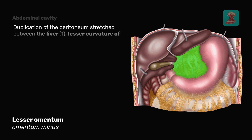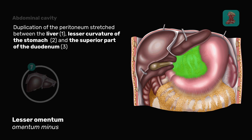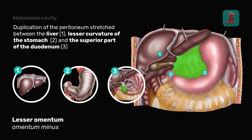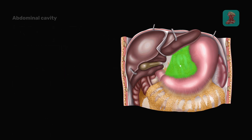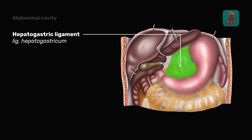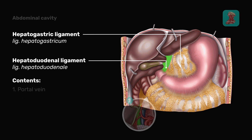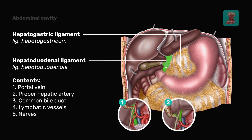The lesser omentum is a duplication of the peritoneum stretched between the liver, the lesser curvature of the stomach, and the superior part of the duodenum. It consists of two ligaments that pass into one another: the hepatogastric ligament and the hepatoduodenal ligament. The portal vein, proper hepatic artery, common bile duct, lymphatic vessels, and nerves pass through its thickness.